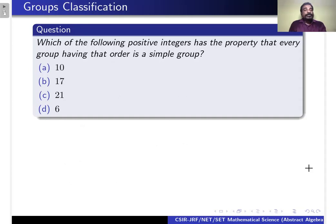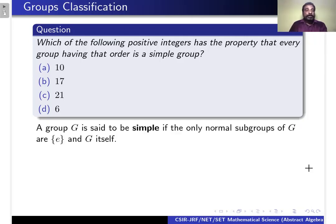Which of the following integers has the property that every group having that order is a simple group? A simple group G is said to be simple if the only normal subgroups of G are the trivial subgroup and G itself — that means G has no proper non-trivial normal subgroups.